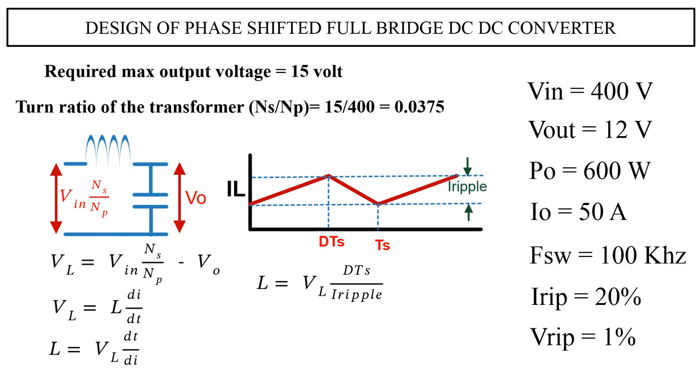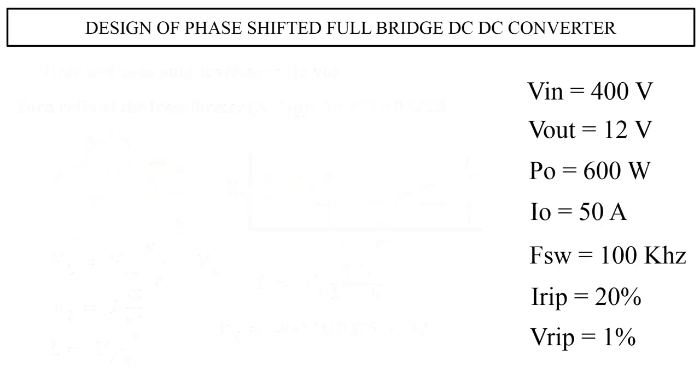So VL equals 400 times 0.0375 minus 12, that is equal to 3 volts. Value of duty ratio D can be calculated as required output voltage divided by maximum output voltage times 1/2, that is 12 divided by 15 times 1/2, which is 0.4.